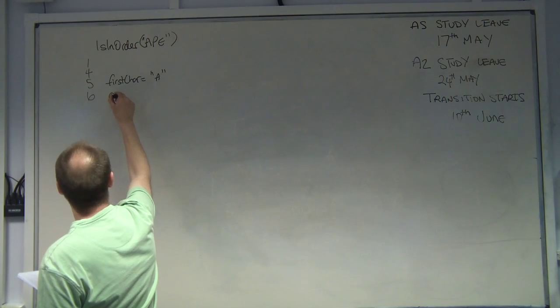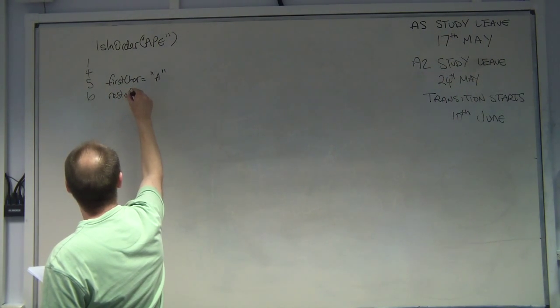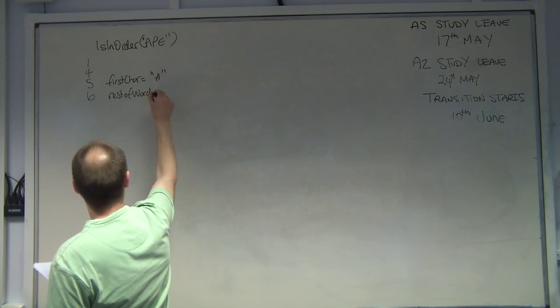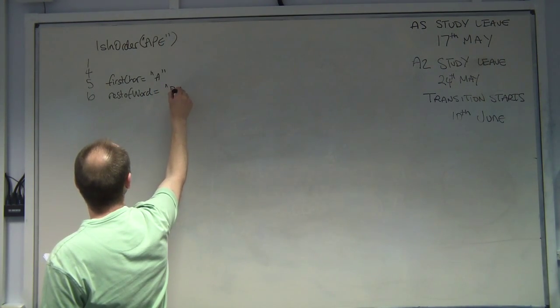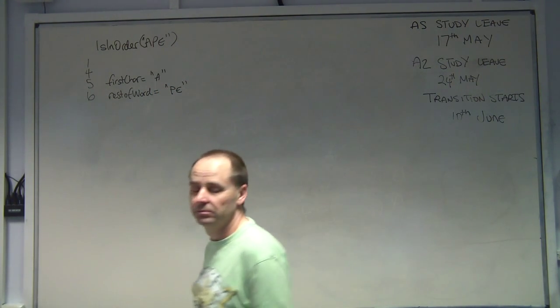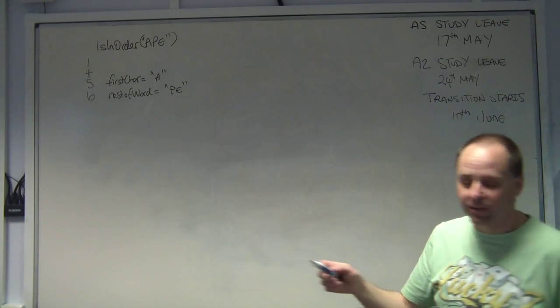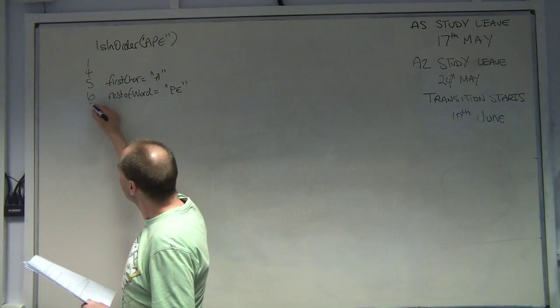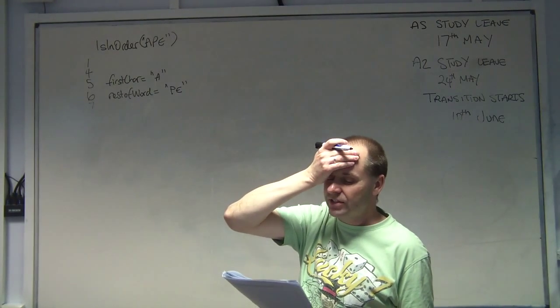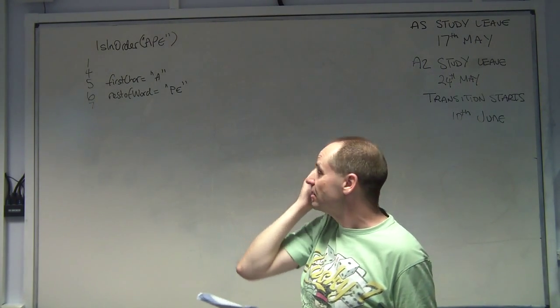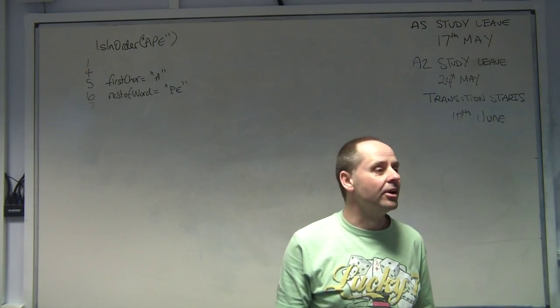Then we'll do line six. So rest of word, as they called it, is set to pe. Everyone happy with that? So that's all it's doing so far. Then we've got an if at line seven and it says if this character is greater than rest of word. It's not, is it?